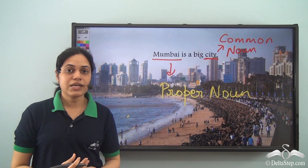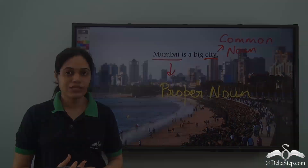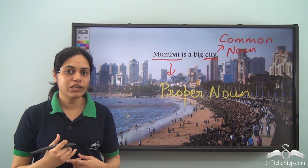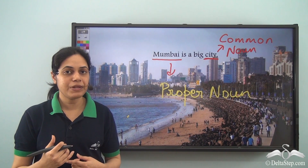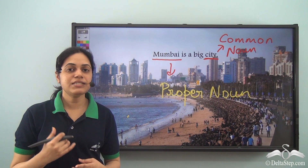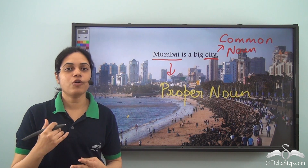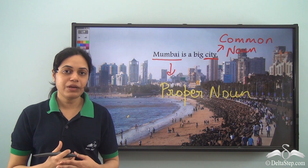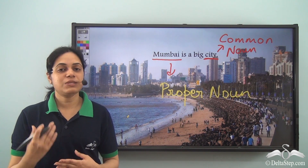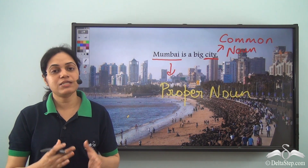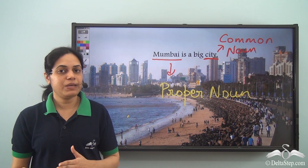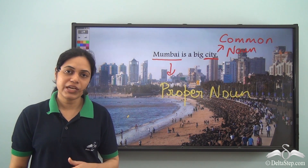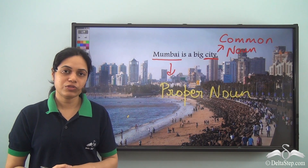So nouns are naming words. The naming words which specify the general names of people, places, animals or things are called common nouns. And the naming words which specify the specific name of people, places, animals or things are called proper nouns.